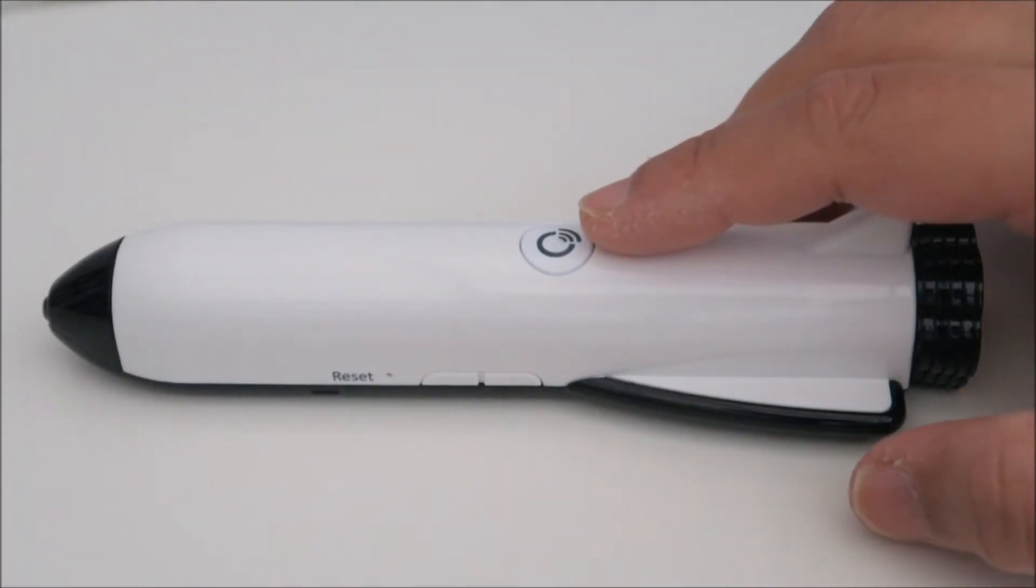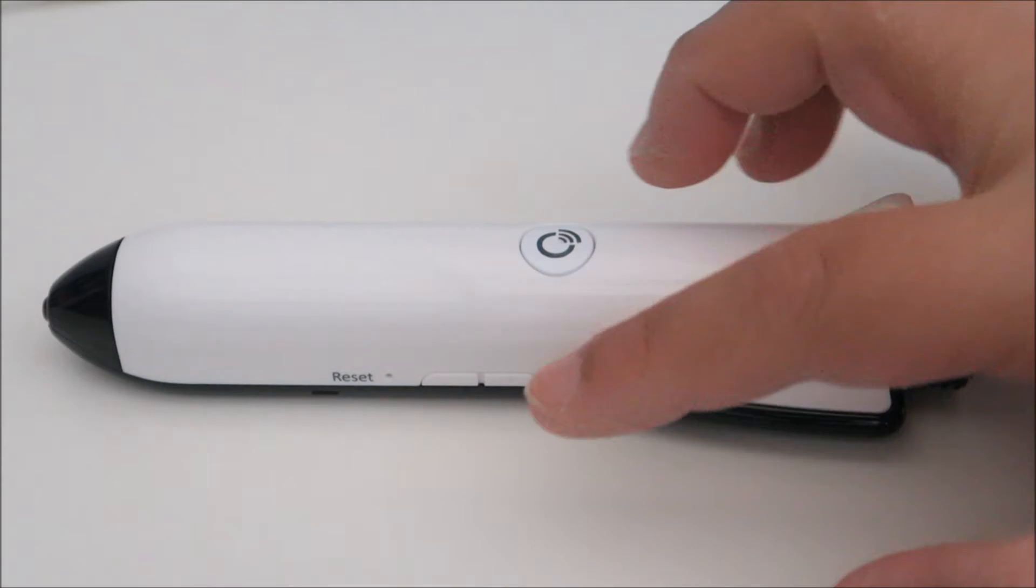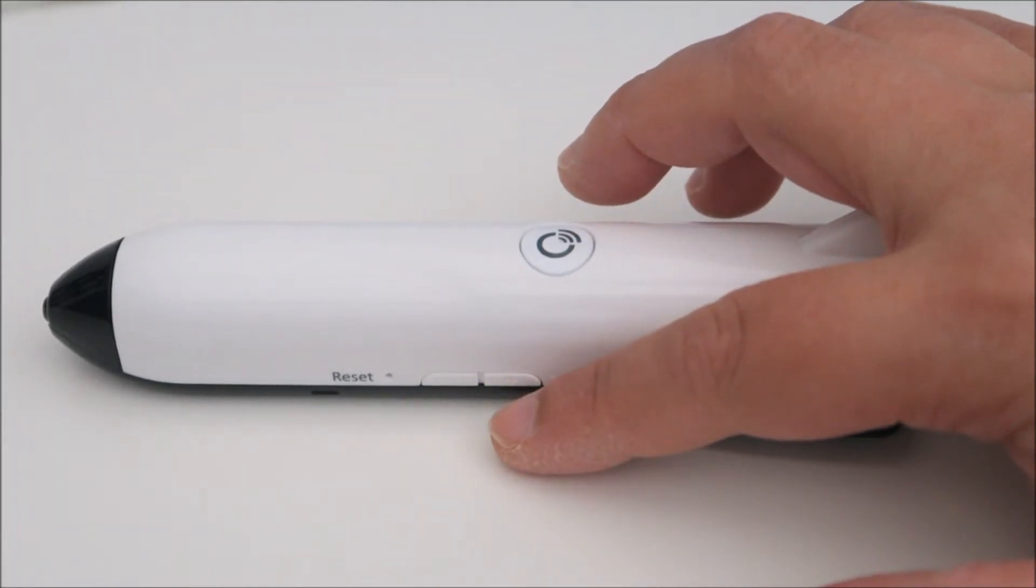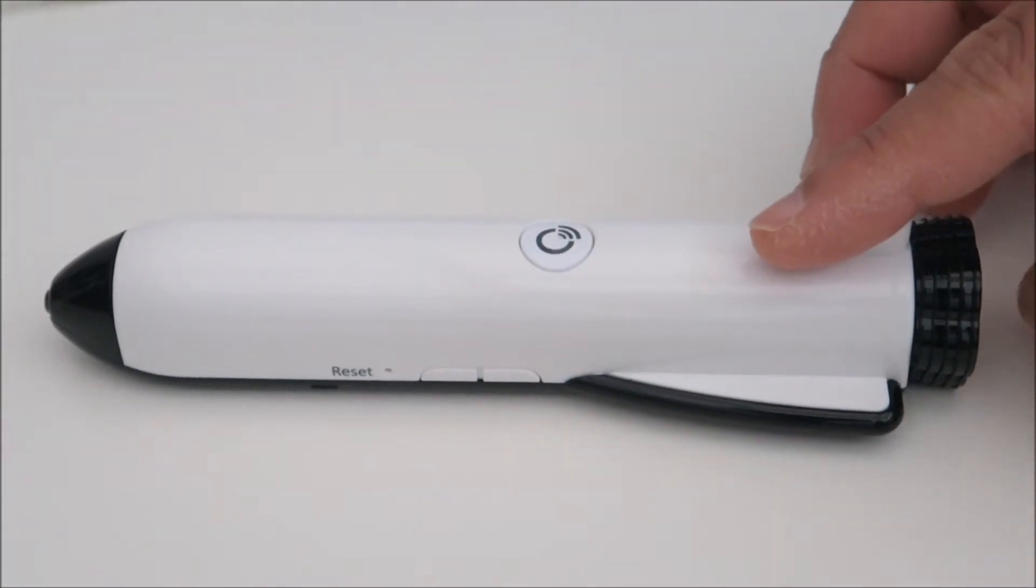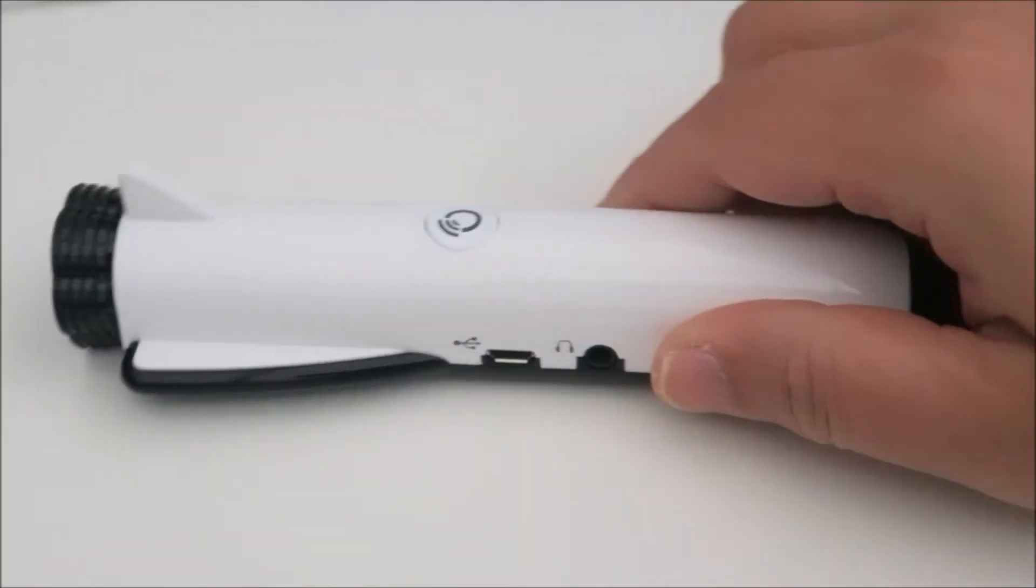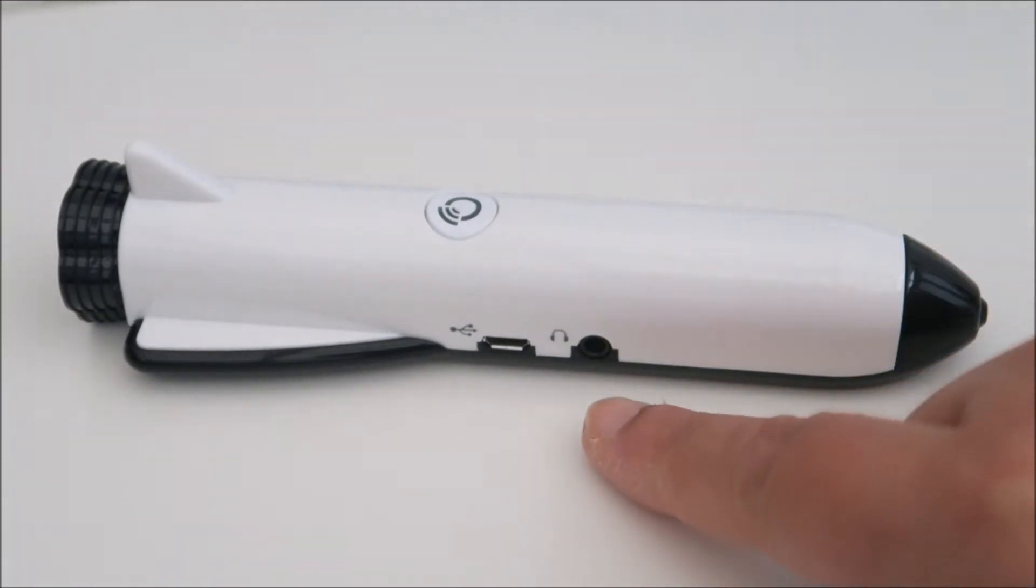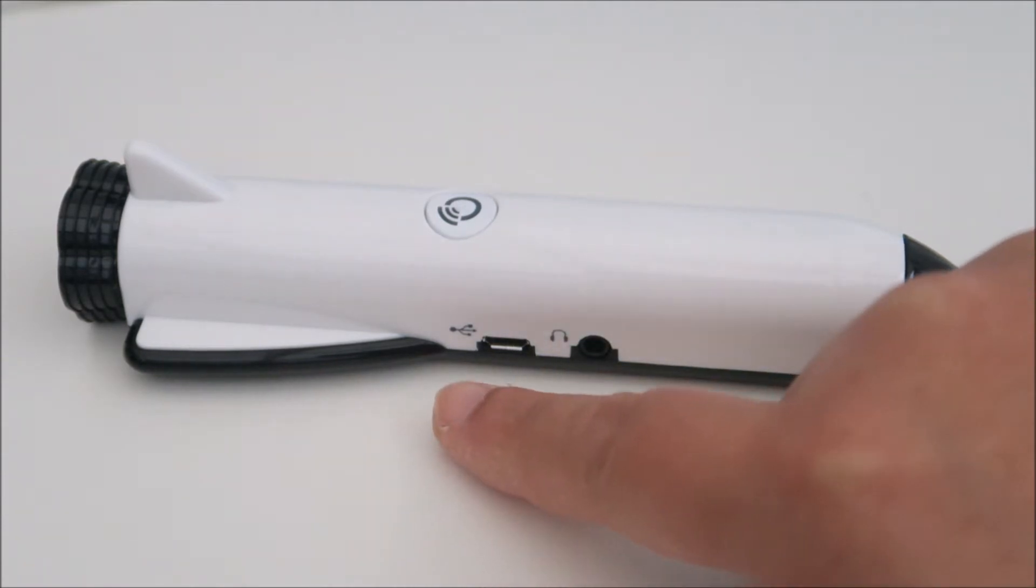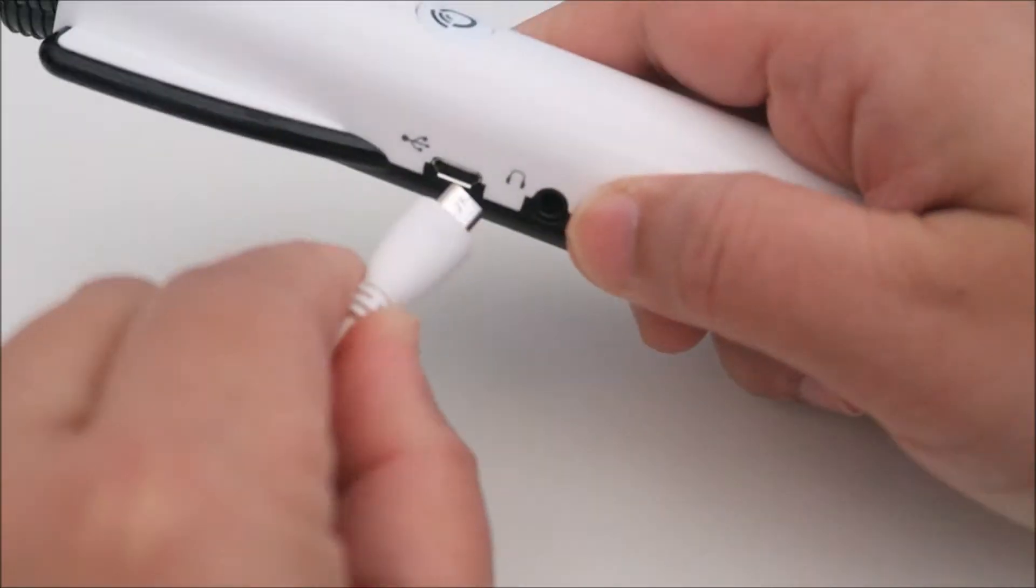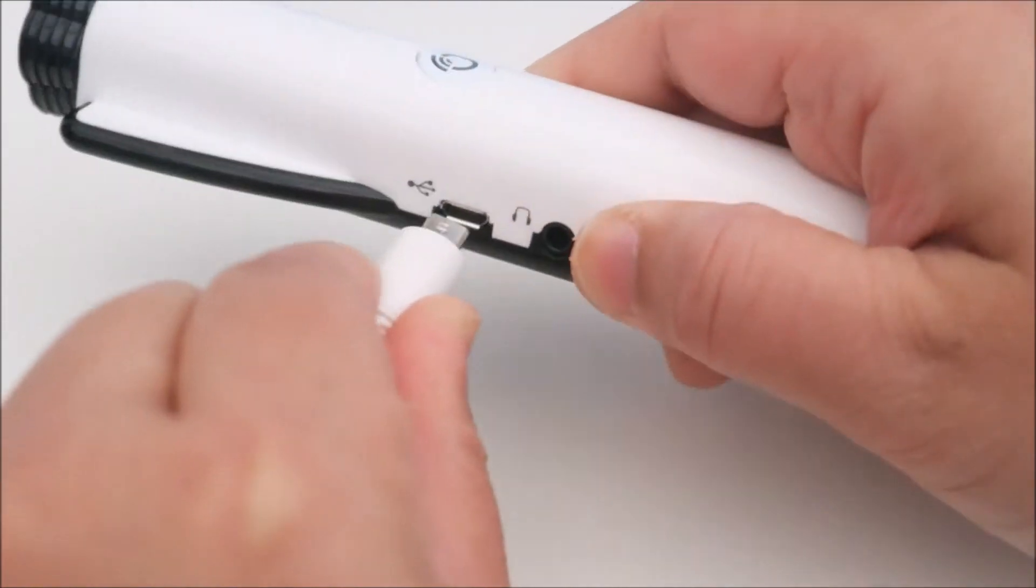On the top here is the on-off button and then you have the volume control on the side here and the speaker is right at the back here. So let's turn around. You have this for your any headphone and then that is for you to charge your smart pen.